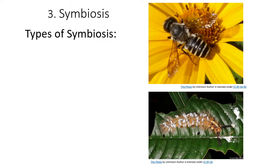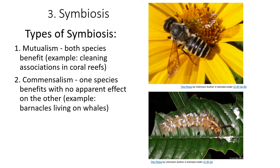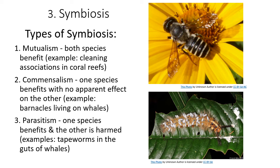Moving on to symbiosis, where one species lives on or with another. The symbiont is generally the smaller organism; the host is the larger. There are three types. Mutualism is where both benefit — bees and flowers are a great example: bees drink the nectar and in return take pollen from one flower to another, fertilizing different flowers. Commensalism is where one benefits and the other is unaffected, such as barnacles living on whales or remoras hitching rides on sharks. Parasitism is where an organism feeds off another.